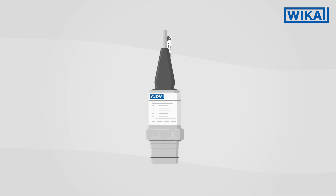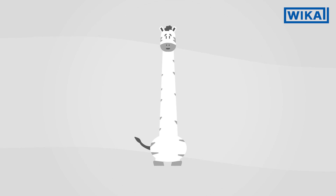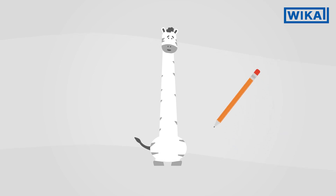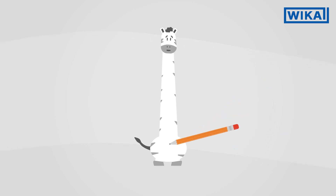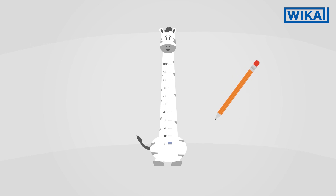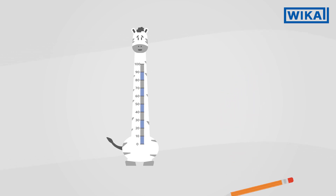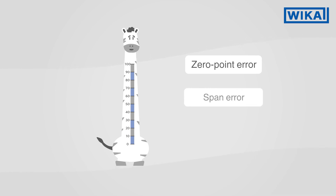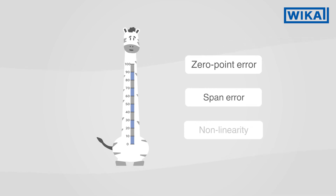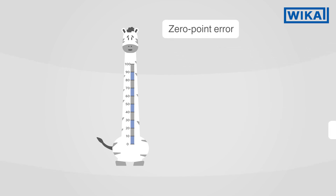A simple children's height chart, in increments of 10 centimeters, here represented by colored blocks. Based on this benchmark, the three most important accuracy-relevant factors for pressure sensors will now be explained.